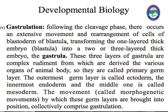Next: Gastrulation. Following the cleavage phase, there occurs an extensive movement and rearrangement of cells of the embryo blastula into a two or three layered thick embryo called the gastrula. These three layers of the gastrula are complex rudiments from which are derived the various organs of the animal body, so they are called primary germ cell layers. The outermost germ layer is called ectoderm, the innermost endoderm, and the middle one is called mesoderm. The movements called morphogenetic movements, by which these germ layers are brought into position, collectively comprise gastrulation.